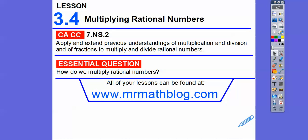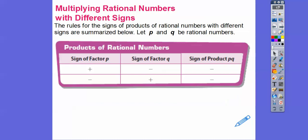Remember, rational numbers are fractions or decimals or even integers. The decimals have to be terminating, which means they stop, or repeating decimals like 0.27272727 and so on.